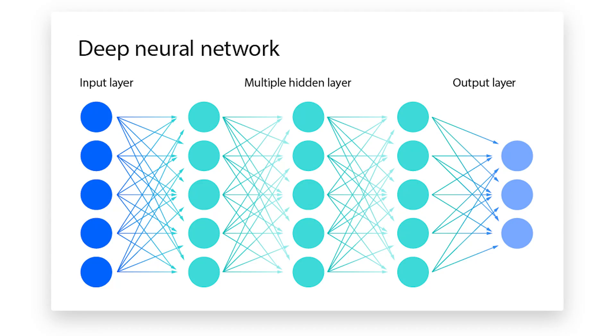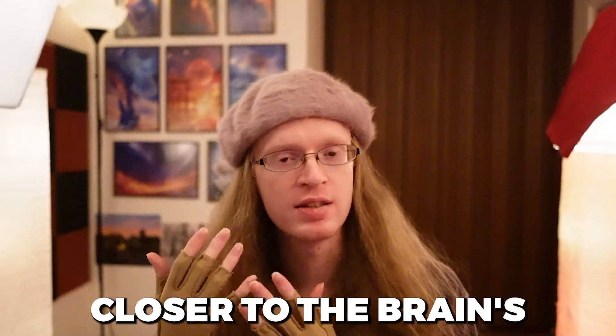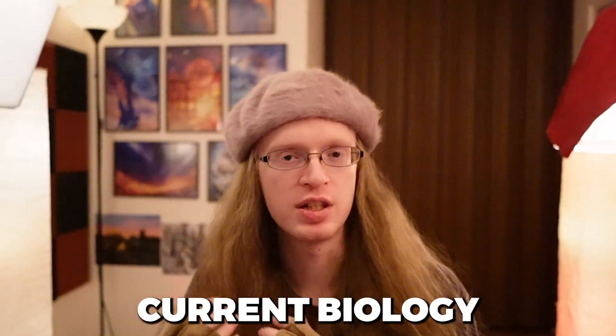Although technically a deep neural network could be considered a neuromorphic system, when people use the term they normally mean something that's closer to the brain's actual biology than our typical techniques.